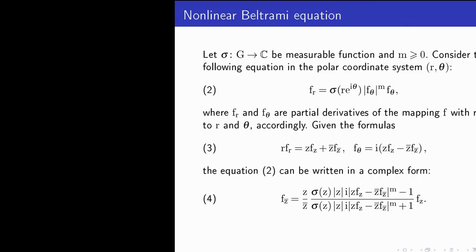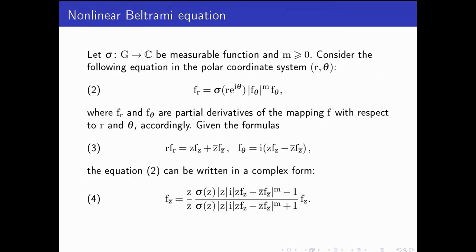Yakubov. Let σ from g to the complex plane C be a measurable function and m ≥ 0. Consider the following equation in the polar coordinate system (r, θ) of the form (2), where ∂f/∂r and ∂f/∂θ are partial derivatives of the mapping f with respect to r and θ accordingly. Given the formulas (3), equation (2) can be written in the complex form (4).